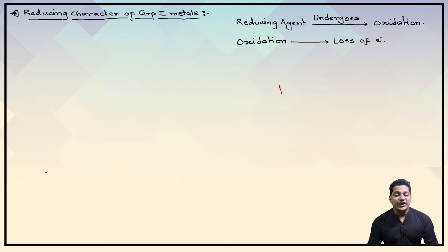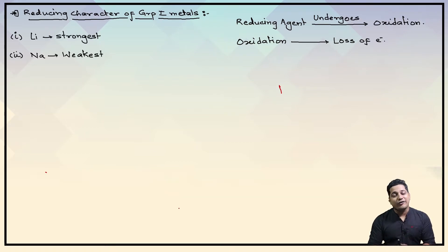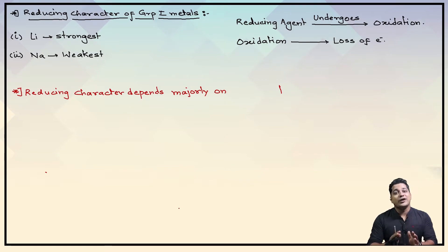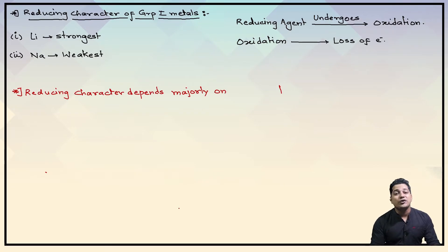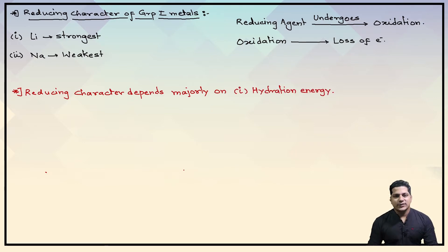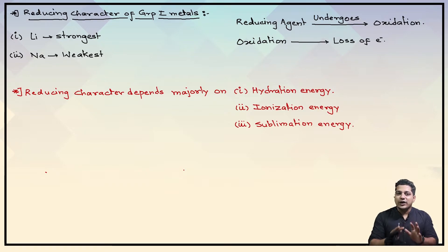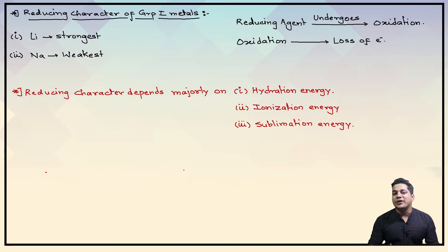The strongest reducing agent is lithium, which means lithium loses electrons very easily. Whereas the weakest reducing agent is sodium. Now lithium is smallest in size, yet it loses electrons very easily because lithium has a very high hydration energy. So let's understand that our reducing agent strength depends on three things.